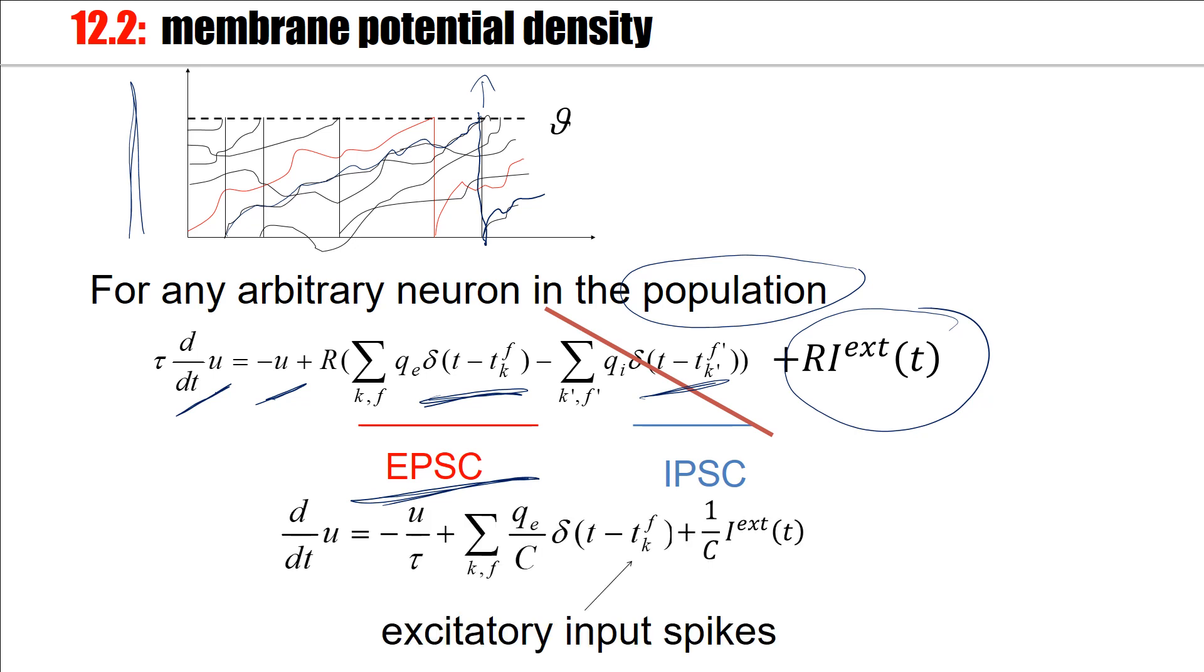So if you just have excitatory spike arrivals, then we can say, I have a change of the membrane potential, there's a decay term towards rest, then QE is the charge of the excitatory spikes, C is the capacity of the membrane, and this is the external input current. And now I would like to derive this density of potentials.